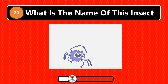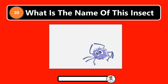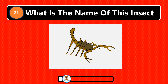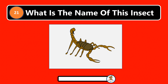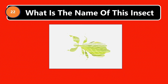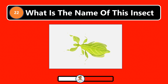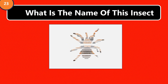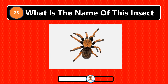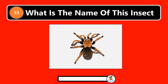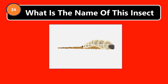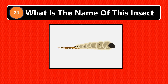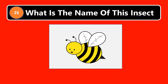What is the name of this insect? Spider. What is the name of this insect? Scorpion. Scorpion. What is the name of this insect? Leaf insect. What is the name of this insect? Tarantula. What is the name of this insect? Grub. Grub. What is the name of this insect?